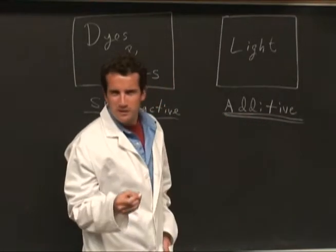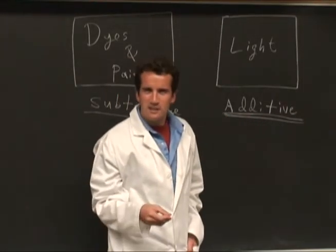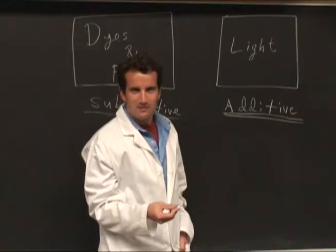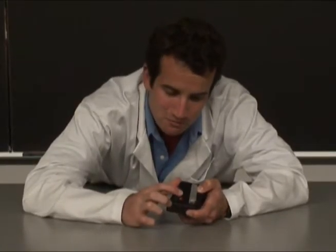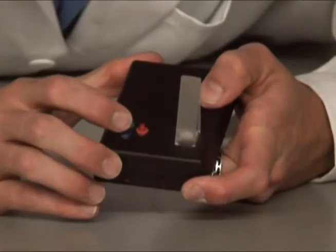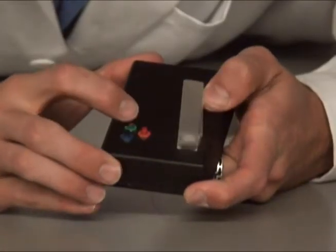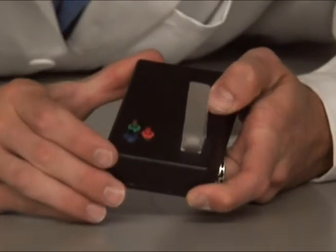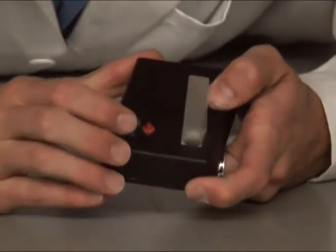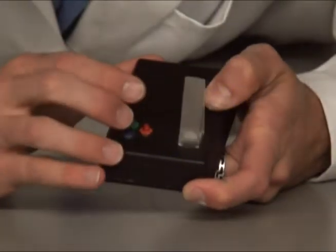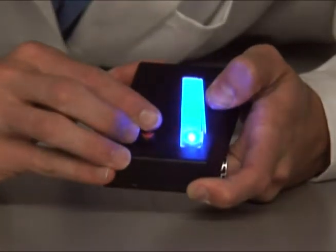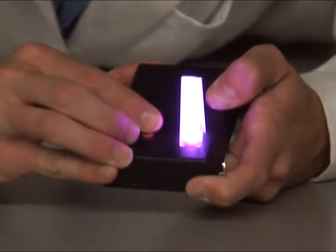When you mix red and blue light, it adds light. This is a device used to mix the primary colors of light: red, blue, and green. If I mix red and blue, I get magenta, a type of pink.